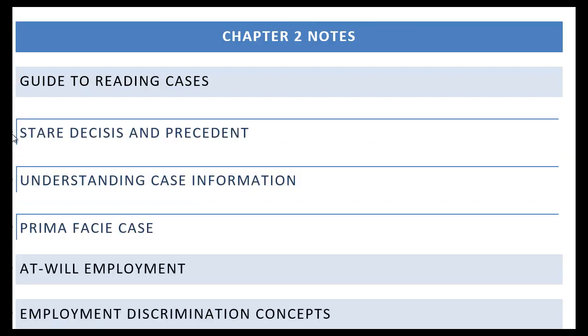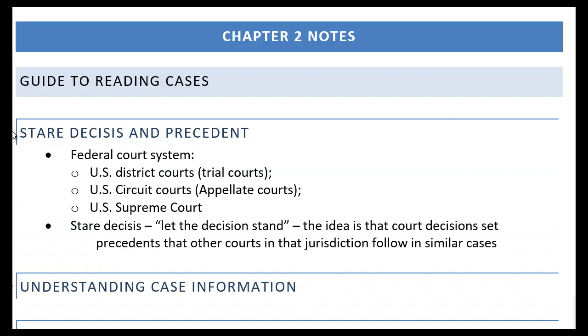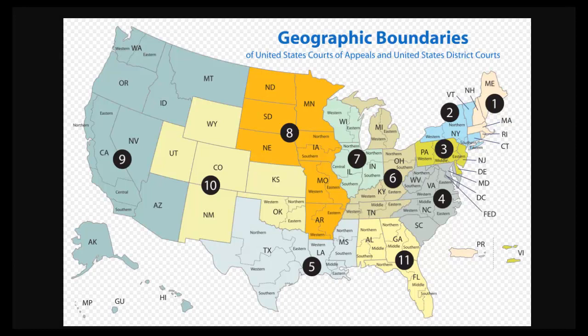One thing to understand about the federal court system — talking about the federal system — every state has their own system as well. But a lot of this employment law is handled at the federal level. So let's talk about that first before we dive into state systems. The federal court system divides the country up into districts that you can see right here. Various geographic regions of the United States fall into different circuits. Each circuit has its own federal court system consisting of lower level district courts and then appellate courts.